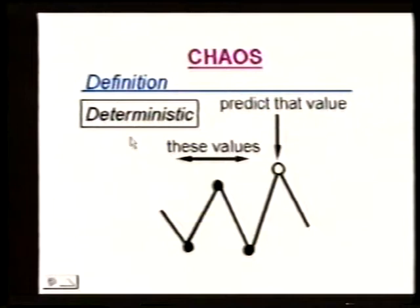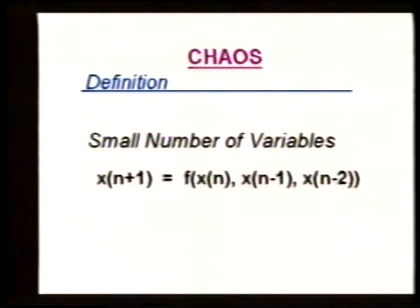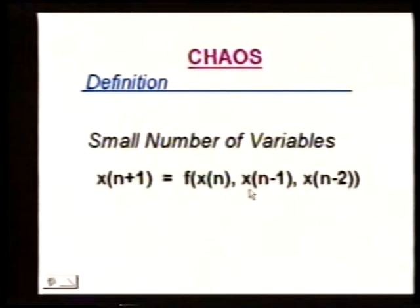The second property — somewhat controversial — is that the number of variables be small. This is not formally in the definition, but I think it's important. The next value of x depends on previous values, but not on an infinite or very large number of them. In this case, it depends on 3, and 3 is small. Ten is still small, but 100,000 is not. Systems depending on a large number of variables have somewhat different mathematical properties than this sort of simple chaos.